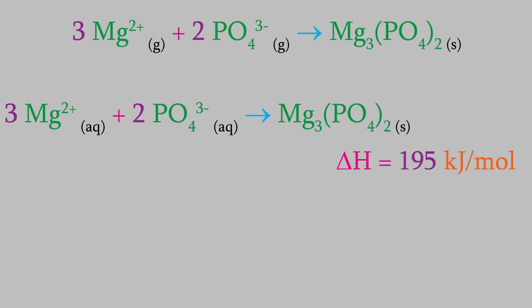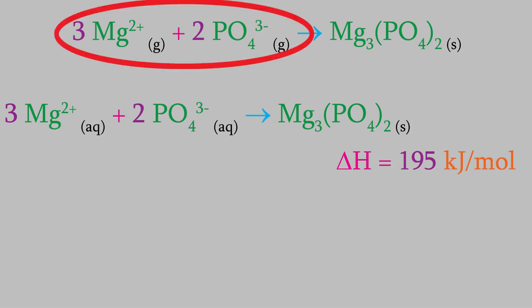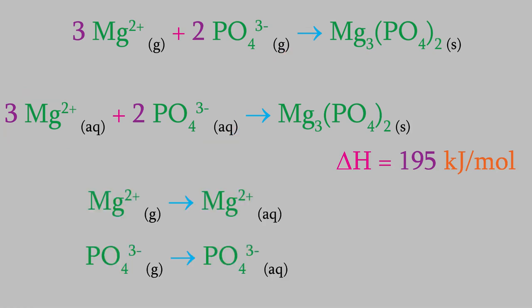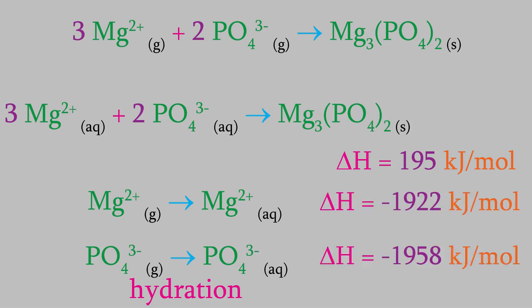So, in order to use Hess's law, we now just need to find reactions that connect the gas phase ions to the aqueous ions, and there are such reactions. Consider these reactions, in which we take gas phase ions and place them in water so that they become aqueous. These are called hydration reactions, and the enthalpies of hydration are known for many different ions. The two hydration reactions we're looking at right now have these specific enthalpies. Now we have reactions connecting gas phase ions to aqueous ions, and another reaction connecting the aqueous ions to the solid crystal — meaning we can now use Hess's law to find the lattice energy.